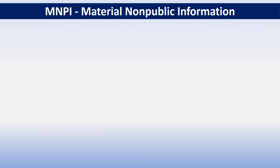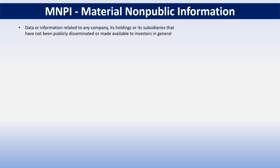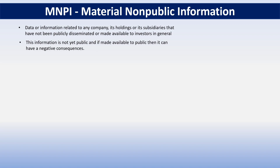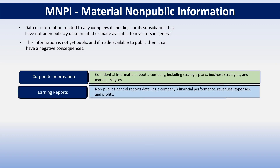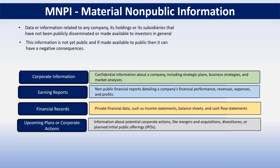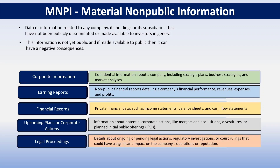Then we have material non-public information, which we call MNPI. It refers to data or information related to any company, its holdings, or its subsidiaries that has not been publicly disseminated or made available to investors in general. This information is highly sensitive and can impact a company's share price because the information is not yet public, and if made available it can have negative consequences. It includes corporate information, earning reports, financial records, upcoming plans or corporate actions like IPOs or acquisitions, or any legal proceedings or rulings against the company. It is strictly regulated to prevent illegal insider trading and requires careful handling and protection.